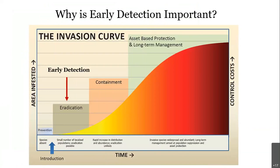Mitch showed you the invasion curve earlier, but I wanted to use it to further emphasize the importance of enhancing early detection efforts. The graph signifies the various stages of invasive species control effort based on population size — there's a direct correlation between infestation size and time. Although preventing a species from invading in the first place is the most effective management strategy, if invasives are discovered before population sizes grow and spread, it significantly increases our chances of suppressing or possibly eradicating the species — and that's where early detection comes in.